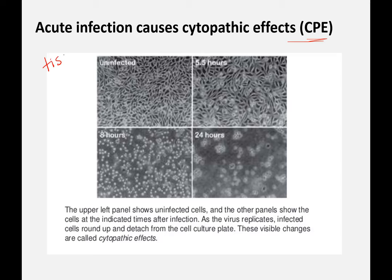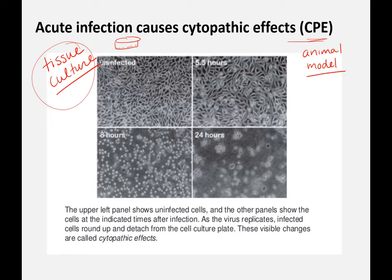To study viruses in the lab, you use either tissue culture — basically a petri dish with cells the virus can infect — or an animal model. To visualize what a virus does to a cell, you use tissue culture, growing one type of cell in what's called a monolayer. You can see all the cells are touching each other, and after about five and a half hours, some cells are starting to round up.